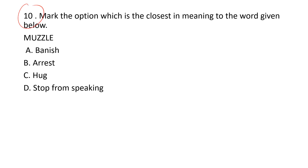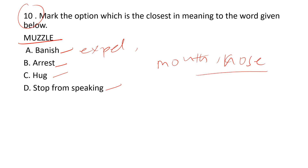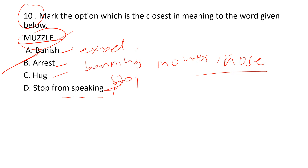The tenth question asks for the closest meaning of the word 'muzzle.' Options include arrest, banish, hug, and stop from speaking. A muzzle is a guard covering an animal's mouth or nose to prevent biting or eating. So muzzle means to restrain or ban — the closest meaning is arrest or stop. Option A — arrest/ban — is the correct answer, since muzzle relates to animals and physical restraint.